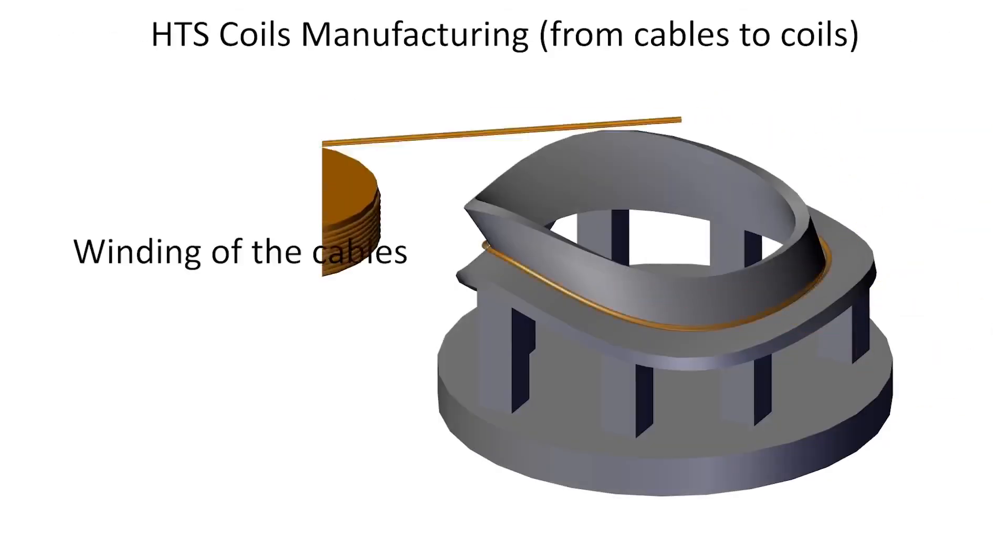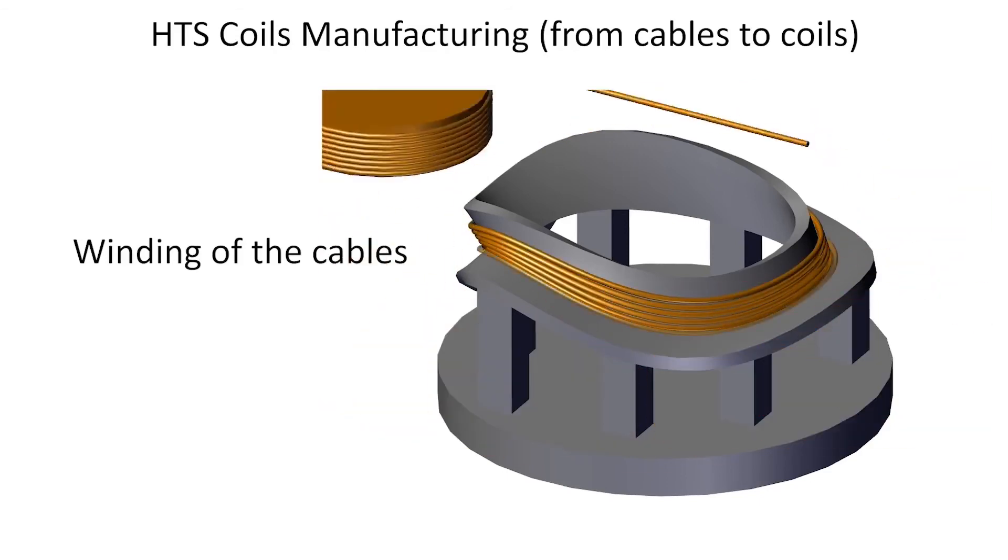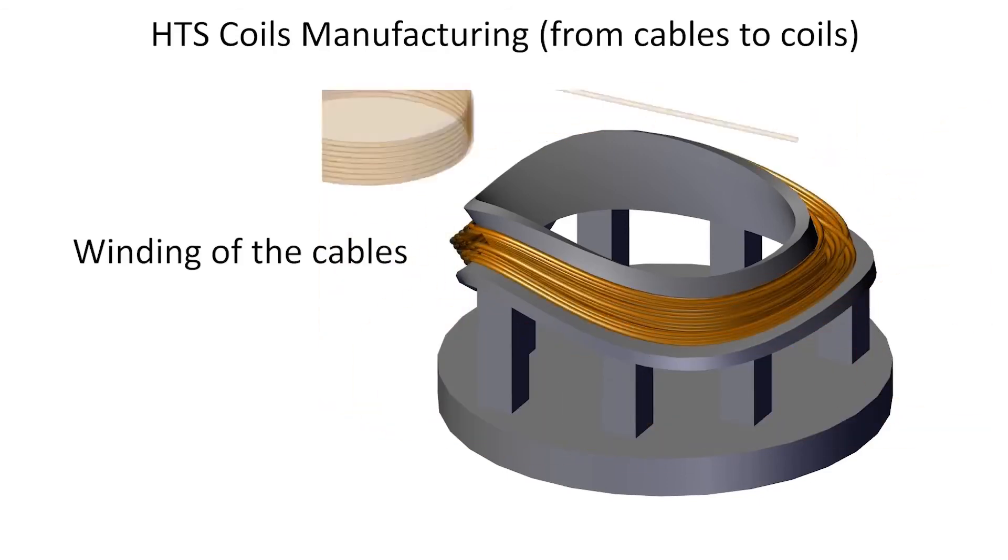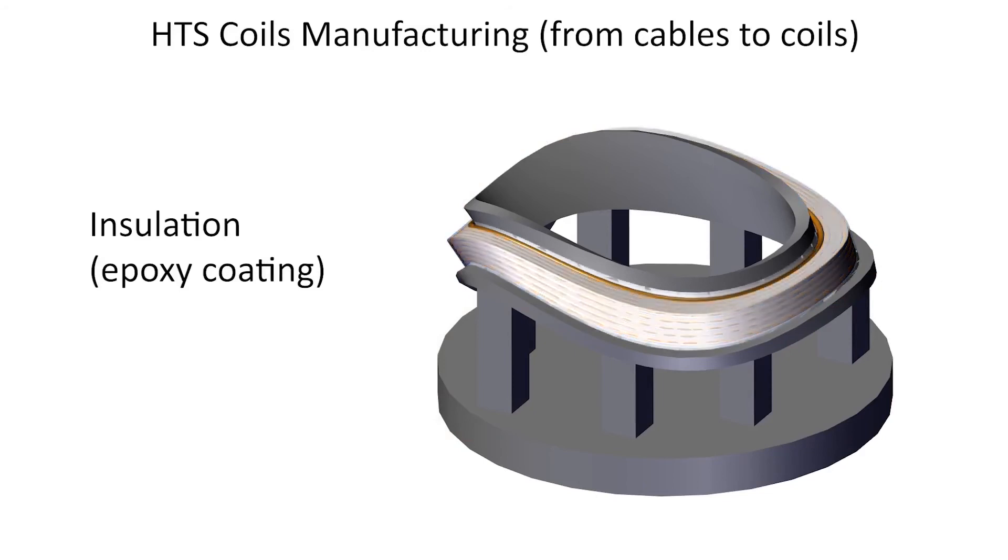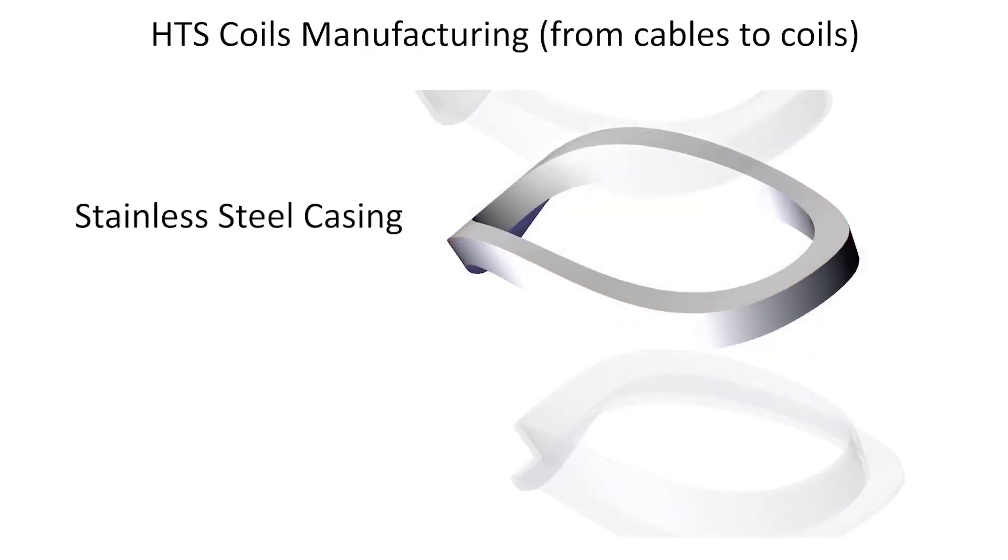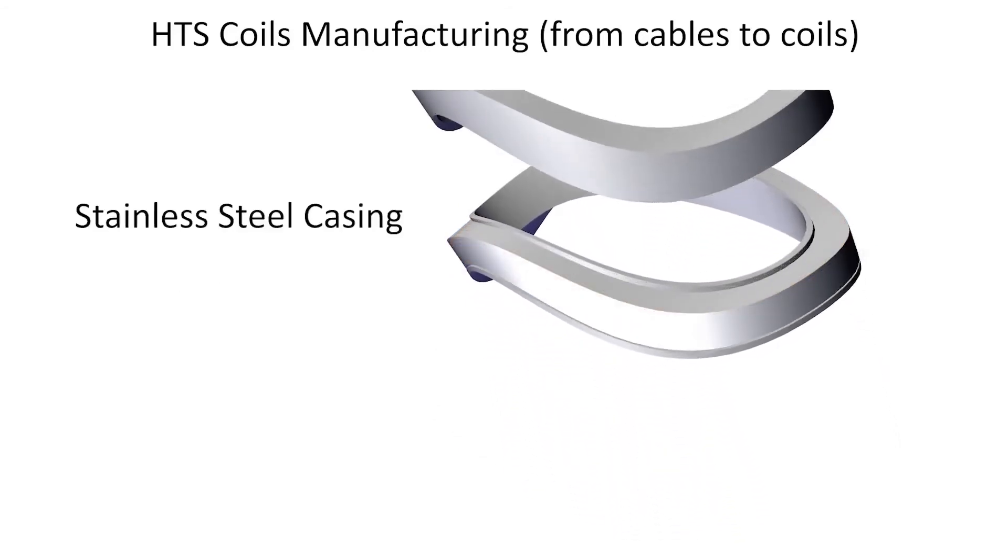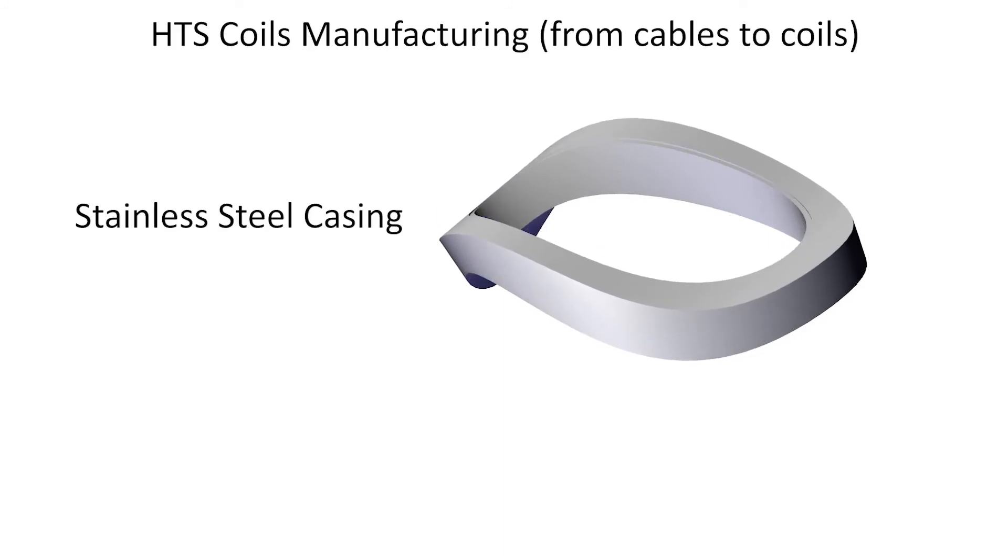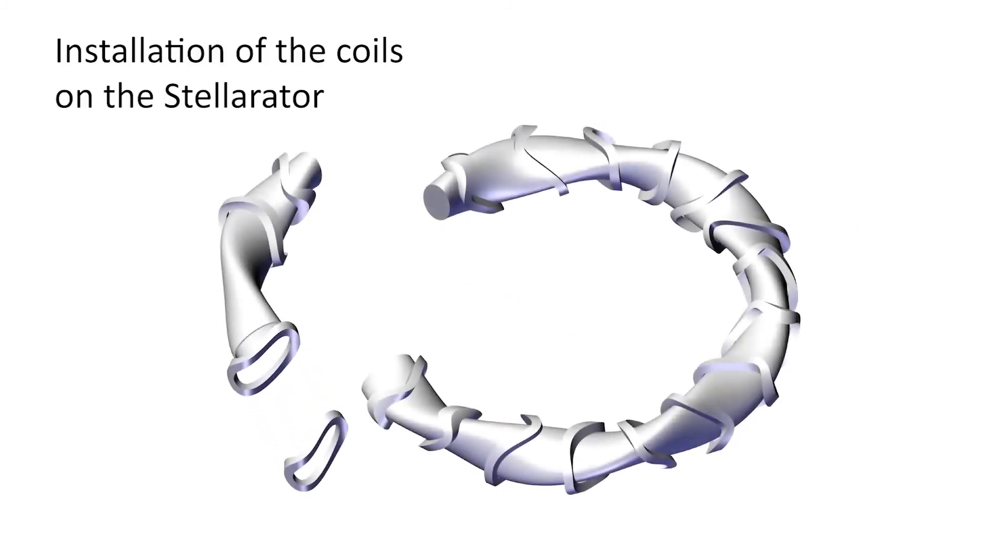The stellarator coils are then made by winding the superconducting cables and all the needed sensors on a former. Insulation is then made by epoxy coating. The structure is then inserted into a stainless steel casing. And this is how the coils for Wendelstein 7-X were made. The coils are then installed on the stellarator vessel. This was a big challenge during the assembly of Wendelstein 7-X due to the complex geometry of the vessel.